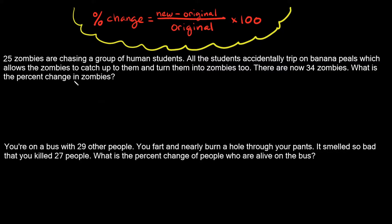Let me show you how we use this formula starting with this first example. This problem says 25 zombies are chasing a group of human students. All the students accidentally trip on banana peels, which allows the zombies to catch up and turn them into zombies too. So there are now 34 zombies. What is the percent change in zombies?